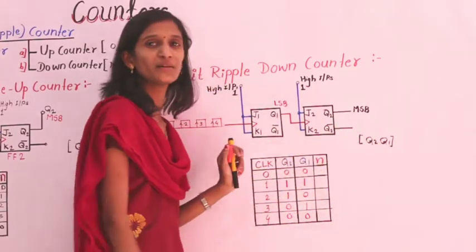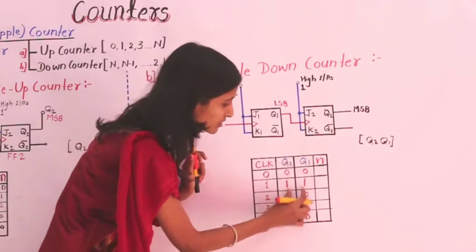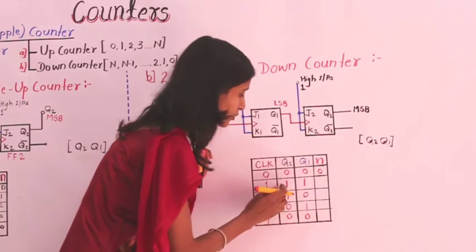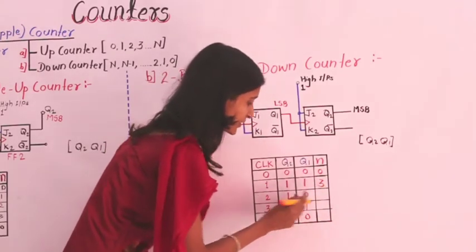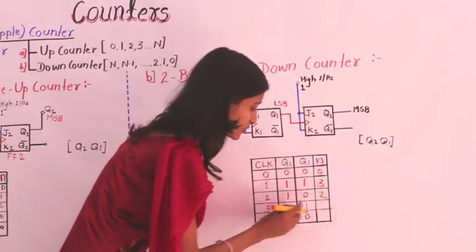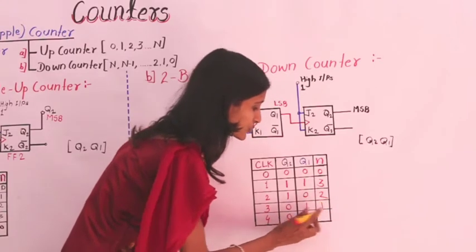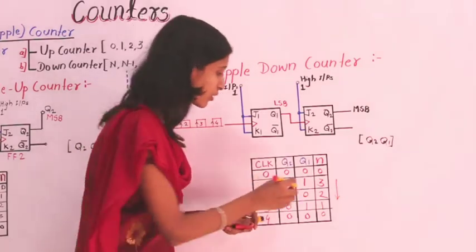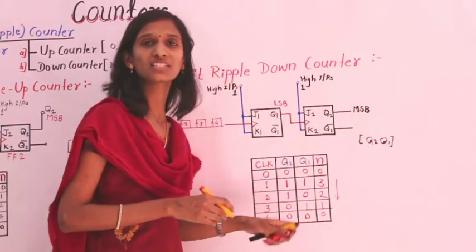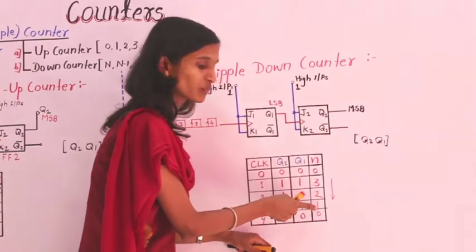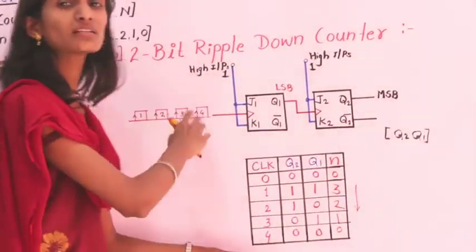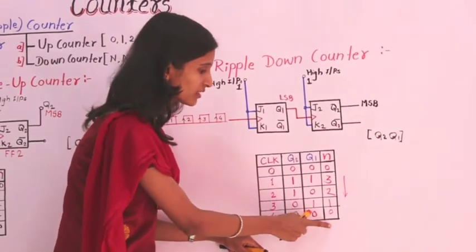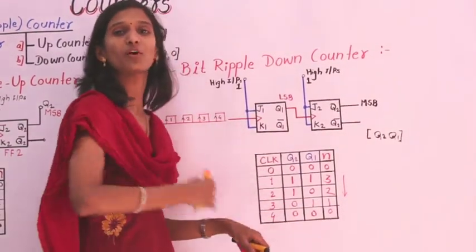Reading the outputs as Q2 (MSB) and Q1 (LSB): 00 = 0, 11 = 3, 10 = 2, 01 = 1, and 00 = 0. So the counter outputs in decreasing order: 0, 3, 2, 1, 0. If we repeat the next cycle (fifth cycle), again we get 3, 2, 1 — and so on. This is how the counter operates, counting down the number of pulses.